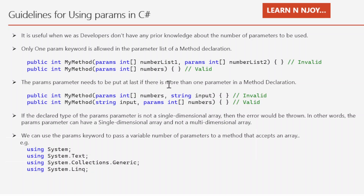Guideline three: the params parameter needs to be placed last if there is more than one parameter in the method declaration. The first example is marked invalid because the params parameter is placed at the first position, not the last. The second statement is valid because the params parameter is placed at the last position.